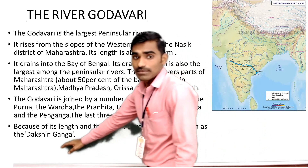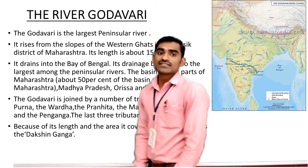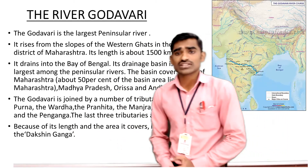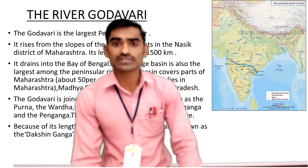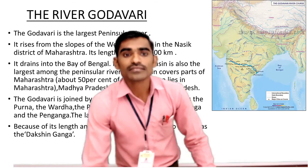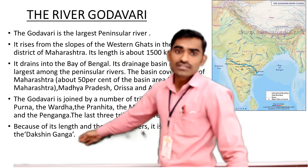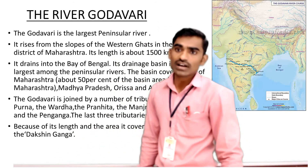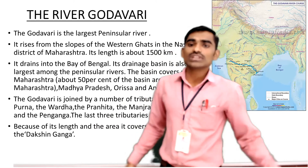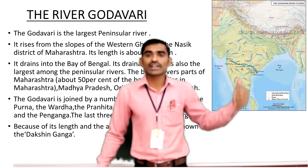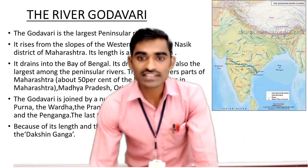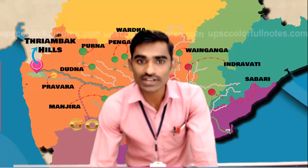You should remember this very important point — which river is called Dakshin Ganga? It is the Godavari River, because the size of the river compels it to be given the name Dakshin Ganga. Ganga is the biggest river, and in Peninsular India, the Godavari River is the biggest river. So it is also referred to as Ganga — that is, Dakshin Ganga.